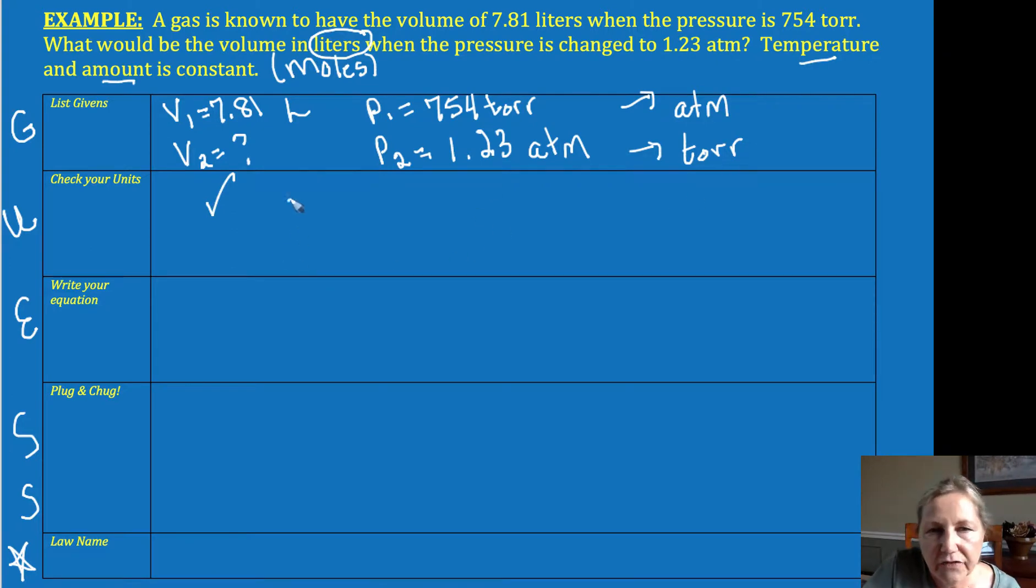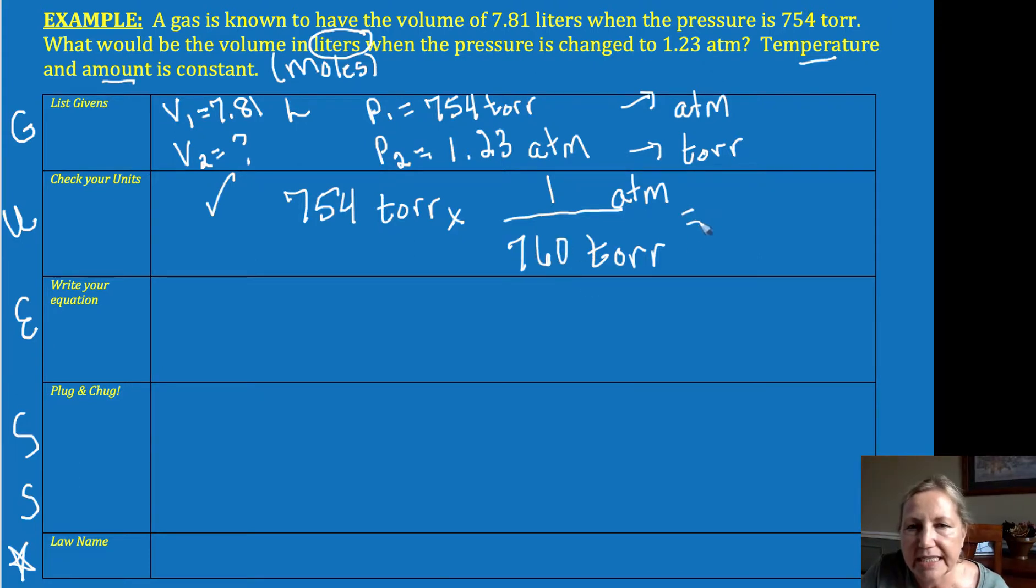I'm choosing to convert that 754 torr to atmospheres. So I want to eliminate torr, I want atmosphere. One atmosphere is 760 torr. Your teacher may or may not ask you to memorize that. And so if I do that math, and I'm going to keep everything at three significant figures—when in doubt, put down three sig figs. So this is 0.992 atmospheres.